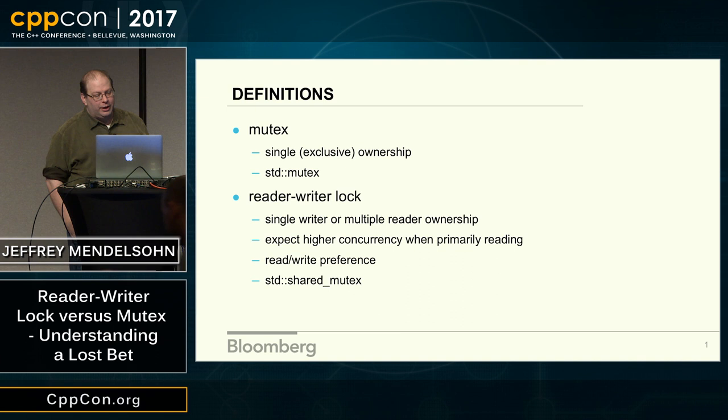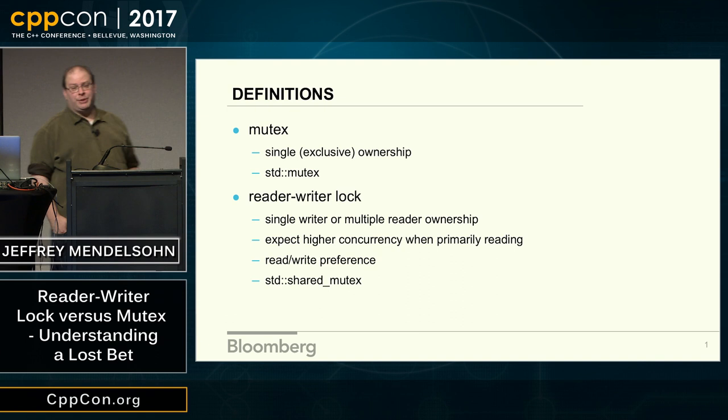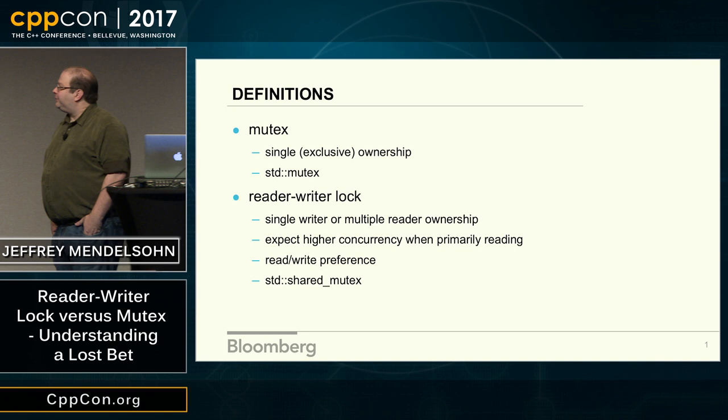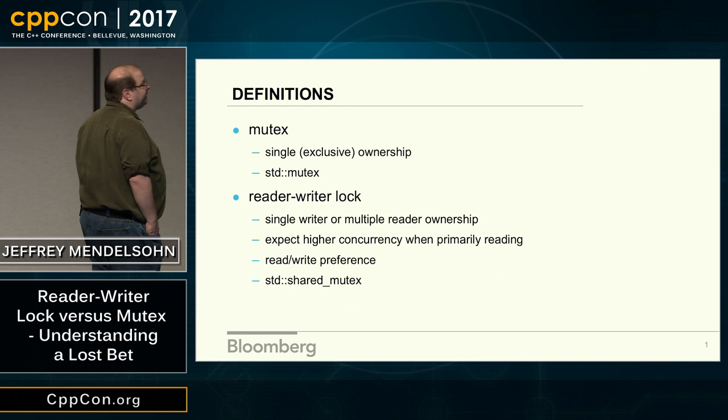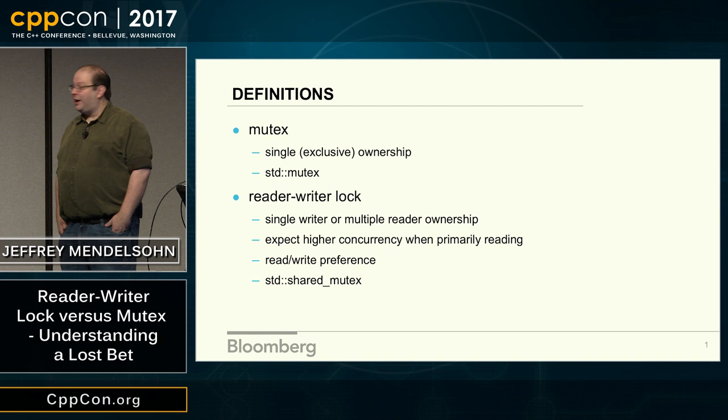I want to make sure I have the same definitions before I get started. A mutex provides mutual exclusion to an object — it's a lock. The most common example is std::mutex in C++11. A reader-writer lock is a bit different in that it allows one writer in or many readers at the same time. The most common example is std::shared_mutex in C++17.